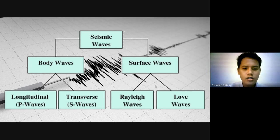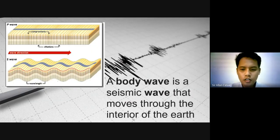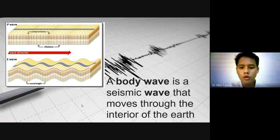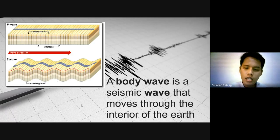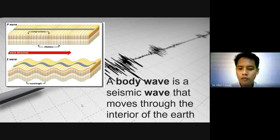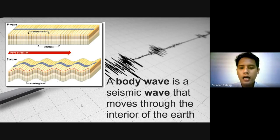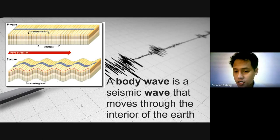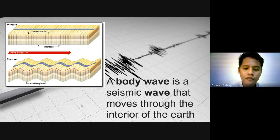Let us discuss each wave. The first type is the body wave. A body wave is a seismic wave that moves through the Earth's interior. From the word itself — 'body' — it travels in the body of the Earth. Body waves are the ones we use to know the Earth's interior, because they are traveling through the Earth's body.